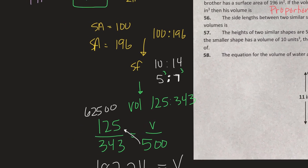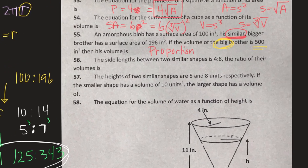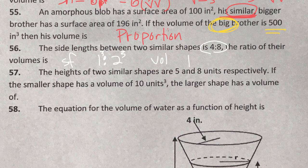So in order to find a volume, you need to have a volume ratio. You need to adjust your area ratio into a volume ratio — your proportions need to have the same units. The side length of two similar shapes is 4 to 8. What's the ratio of their volumes? 4 to 8 reduces to 1 to 2, so we have a scale factor of 1 to 2. To get volumes, we cube both: 1 cubed is 1, 2 cubed is 8. So the volume ratio is 1 to 8.